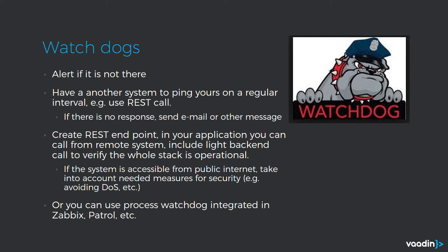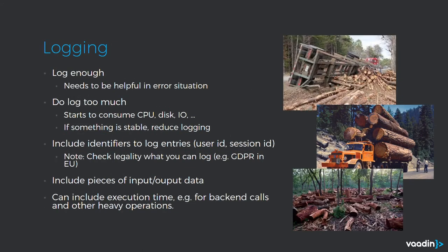In some cases, if you want to go light, you can create the watchdog yourself without using an enterprise tool. You can set up a simple watchdog by having another system ping your application at regular time intervals. For example, you create a REST endpoint in your application with a very light back-end call to get a whole stack check that it's operational. If the system doesn't answer this REST call, you know something is wrong and can send an email or a Slack message.